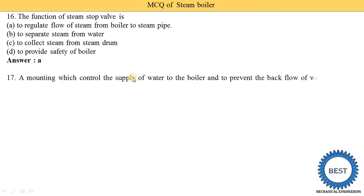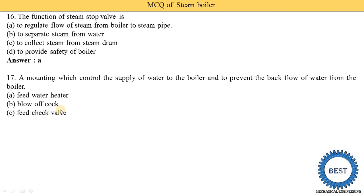A mounting which controls the supply of water to the boiler and prevents backflow of water from the boiler is called the feed check valve — option C is correct. A pump is connected to the feed check valve, and through it water is supplied to the boiler. The feed water heater is called the economizer, and the blow-off cock is used for emptying the boiler drum.